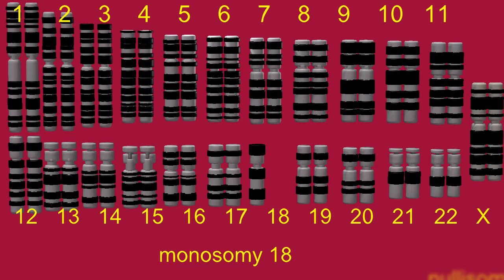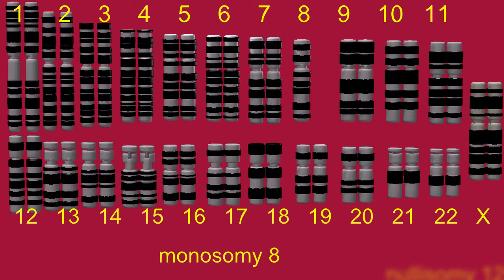Monosomy 18 would represent a monosomy lacking one copy of chromosome 18, and monosomy 8 would indicate the absence of one copy of chromosome 8.